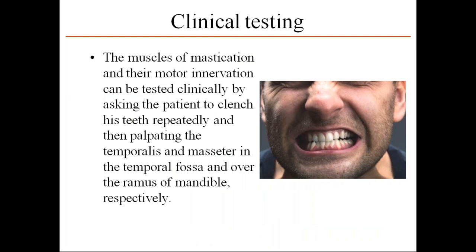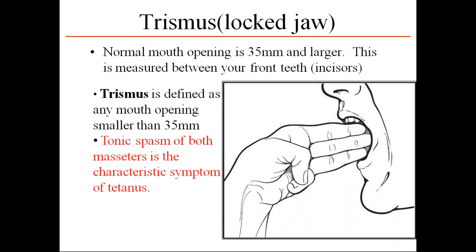For applied anatomy: to test the mandibular nerve, ask the patient to clench their teeth repeatedly and palpate the temporalis and masseter. If the muscles contract, the nerve is active; if not, there is a lesion. The clinical condition related to the masseter is trismus, also called locked jaw.